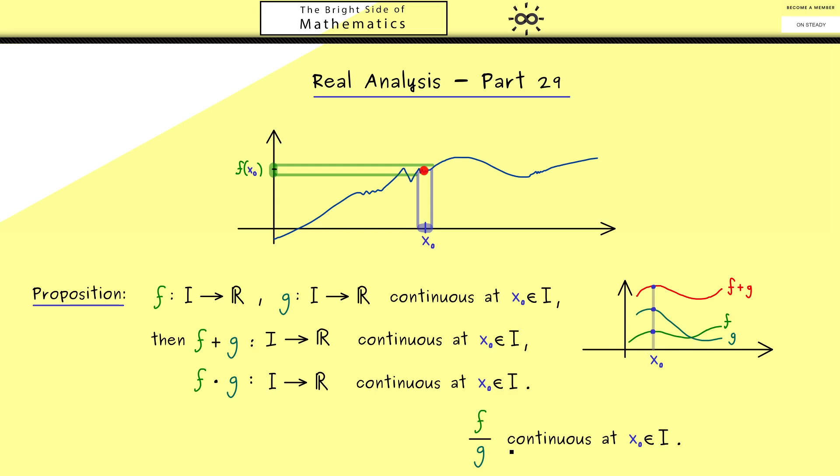Nevertheless, for us the most important part is that g of x₀ is not 0. So that's the only thing we need in addition, you can only divide if we exclude 0. Okay, so this is our result. We have different combinations of functions but the continuity stays.